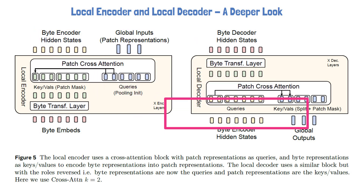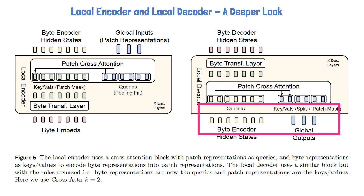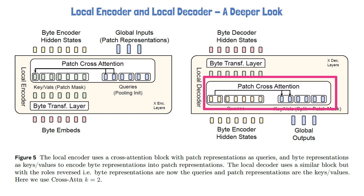Moving to the local decoder, it receives the encoded bytes from the local encoder and the patch outputs from the latent transformer. The local decoder is essentially an inversion of the local encoder. It starts with a cross-attention block to unpatch the output patches into a byte sequence, where the roles are now switched: patches are used as keys and values, while the byte encoder hidden states are used as queries. The cross-attention retains the dimensions of the queries, resulting in a byte sequence enriched with information from the patches. This enriched byte sequence then passes through a byte-level transformer layer generating hidden states. The local decoder layers are stacked, where each layer receives the byte decoder hidden states from the previous layer and the same output patches from the latent transformer.